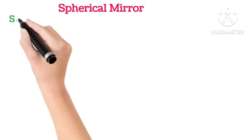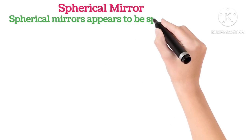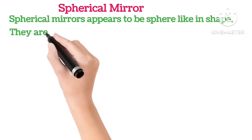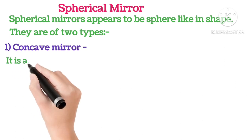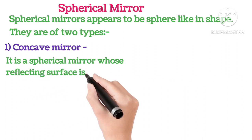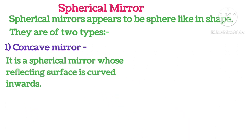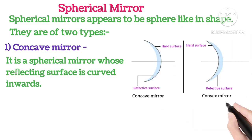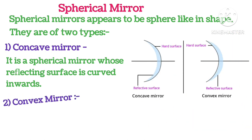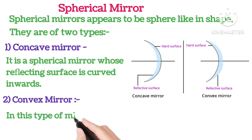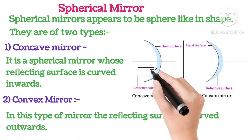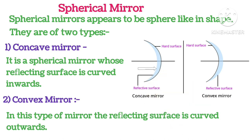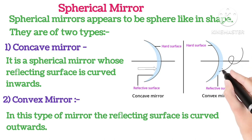Spherical mirrors. Spherical mirrors appear to be sphere-like in shape. They are of two types. Concave mirror: it is the spherical mirror whose reflecting surface is curved inwards, as you can see in the picture. Convex mirror: it is the mirror whose reflecting surface is curved outwards, as you can see in the picture. So, the concave mirror's reflecting surface curves inwards and the convex mirror's reflecting surface curves outwards.